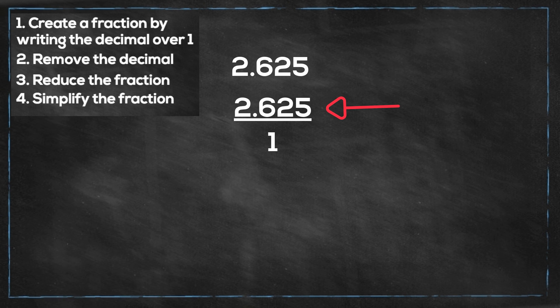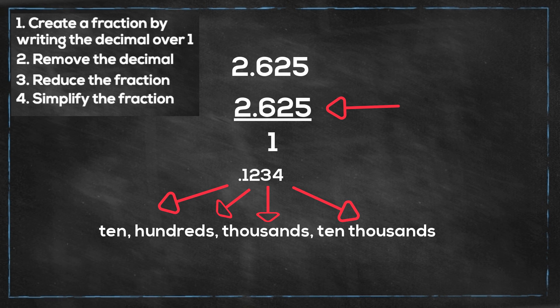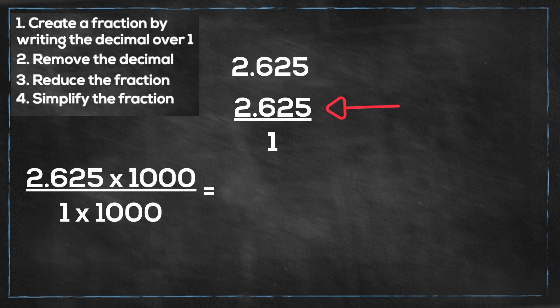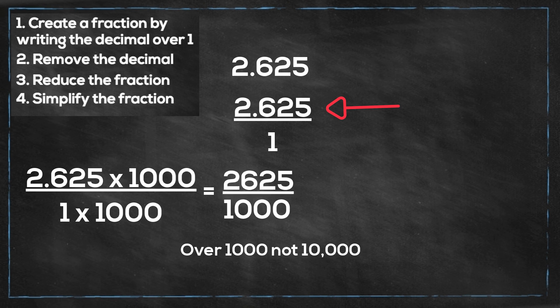Again we have tenths, hundredths, thousandths. So we will multiply the numerator and denominator by 1,000. That gives us 2,625 over 1,000.